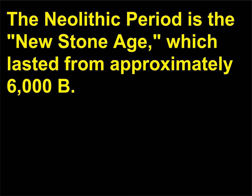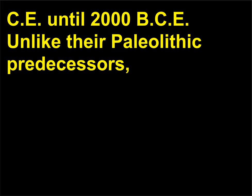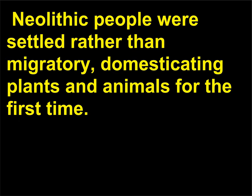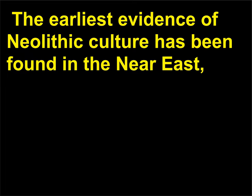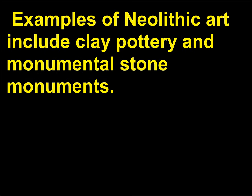The Neolithic period is the New Stone Age, which lasted from approximately 6000 BCE, succeeding Paleolithic predecessors. Neolithic people were settled rather than migratory, domesticating plants and animals for the first time. The earliest evidence of Neolithic culture has been found in the Near East, including the modern-day countries of Jordan, Syria, and Turkey. Examples of Neolithic art include clay pottery and monumental stone monuments.